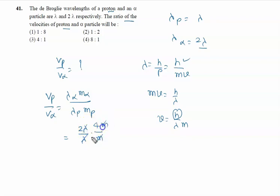Lambda cancels with lambda, m cancels with m, leaving 2 times 4 equals 8. The right answer is 8 to 1, which is option A.